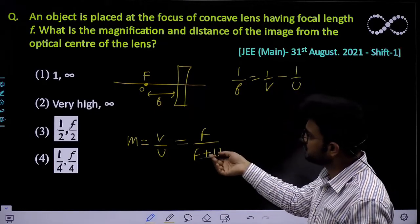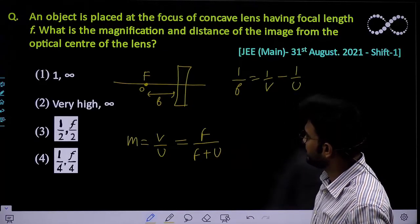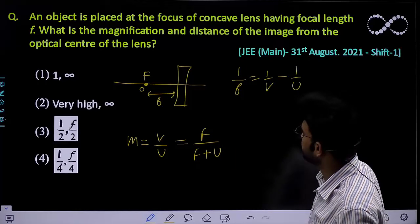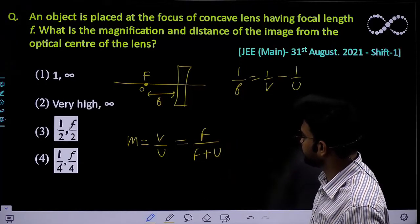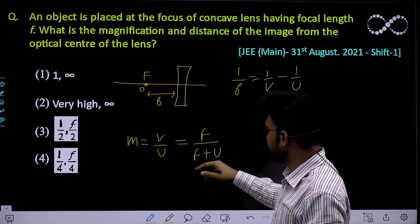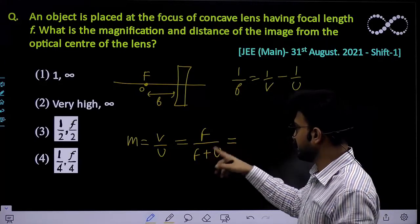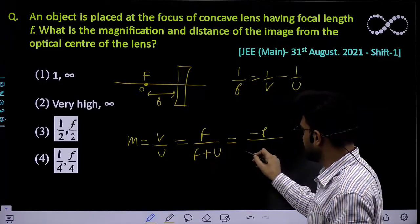The focal length is f, and since the object is at the focus, u = -f. The magnification from this formula can be calculated as -f divided by -f plus u.